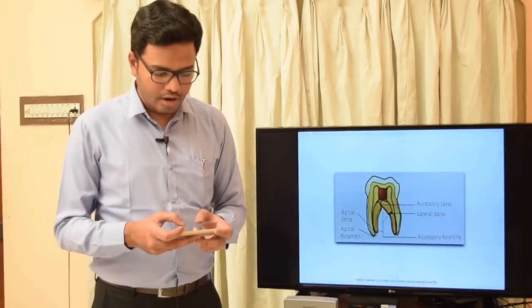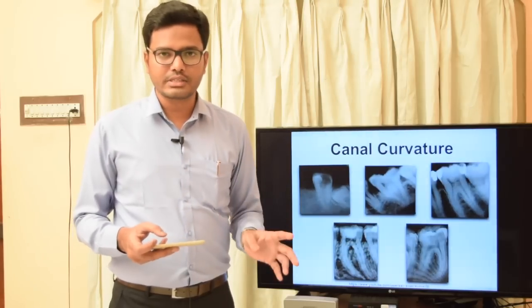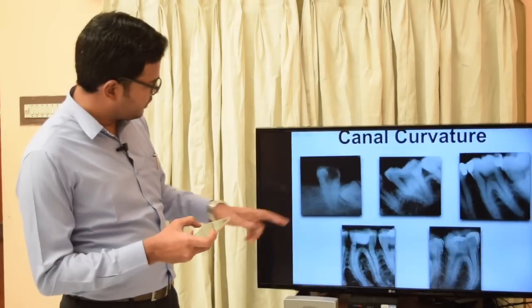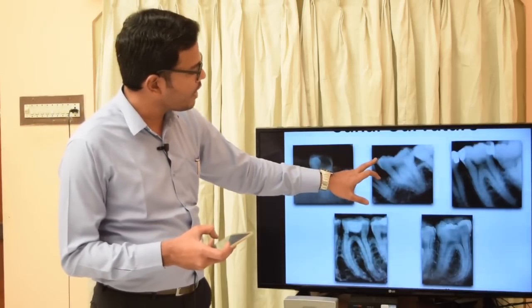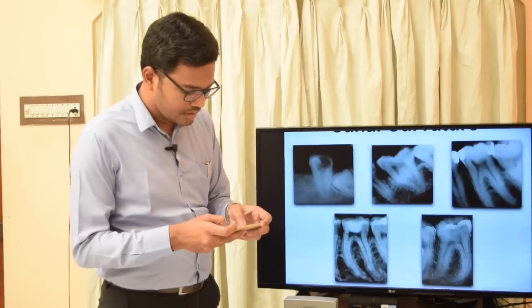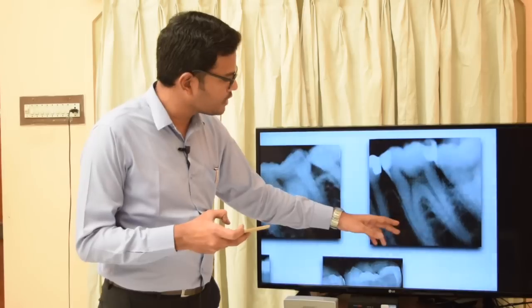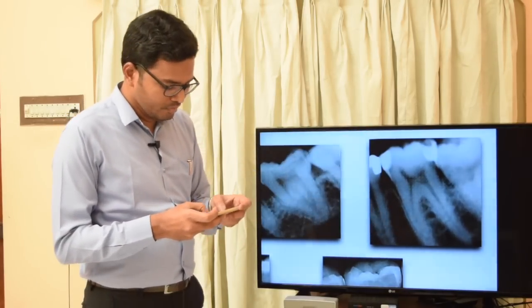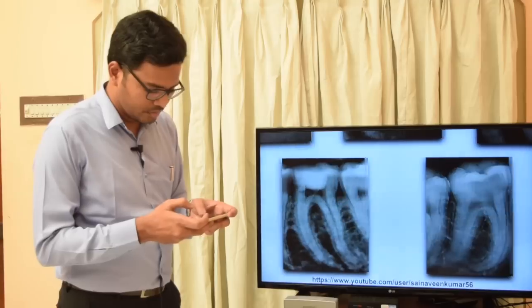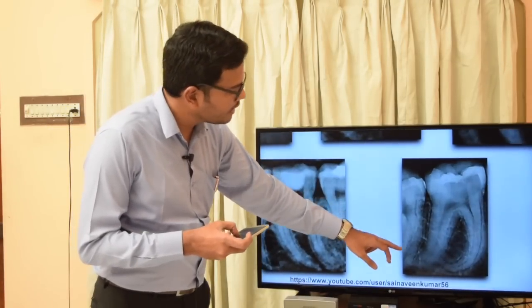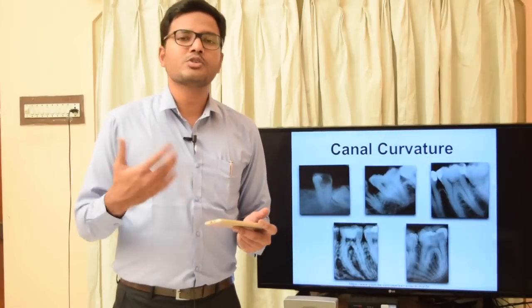Now let's look at the radiographic features of these canals. In the first image, the root canal is almost straight with no curvature. The second image shows canals with gradual curvatures but a straight opening. The third image shows a gradual curvature from crown to apex. The fourth and fifth images show a sudden or extreme curvature in the apical third of the root.